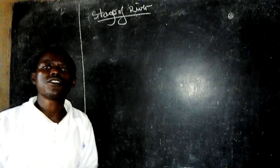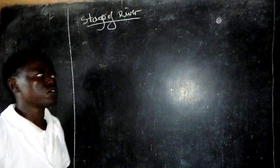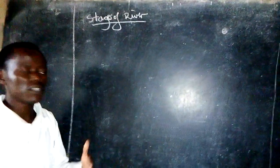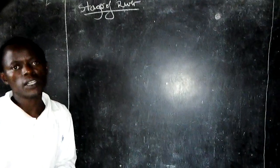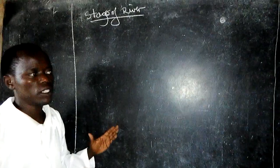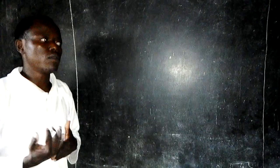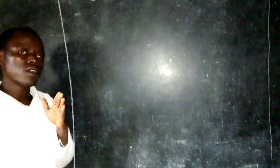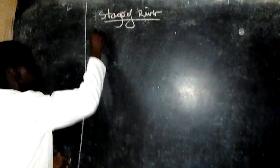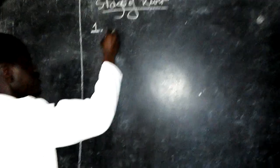Welcome back to this episode of physical geography. We are still on the drainage of Africa. In the previous episode we were talking about the long river profile, or the stages of a river, and now we are going to see each stage with its own characteristics.